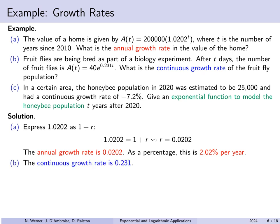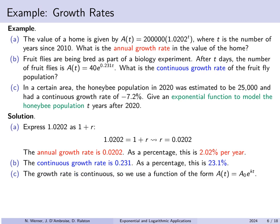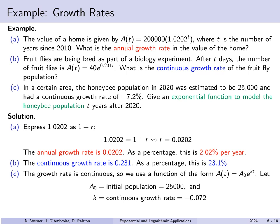For part c, we are given a continuous growth rate of negative 7.2%, so we use the form a(t) = a₀ · eᵏᵗ. The initial honeybee population in 2020 is a₀ = 25,000, and the continuous growth rate is k = −0.072. So the model is a(t) = 25,000 · e^(−0.072t), where t is years after 2020.